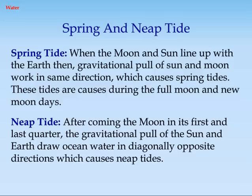Spring and Neap Tide. Spring tide: when the moon and sun line up with the earth, the gravitational pull of the sun and moon work in the same direction, which causes spring tides. These tides occur during the full moon and new moon days. Neap tide: after the moon comes into its first and last quarter, the gravitational pull of the sun and moon draw ocean water in diagonally opposite directions, which causes neap tides.